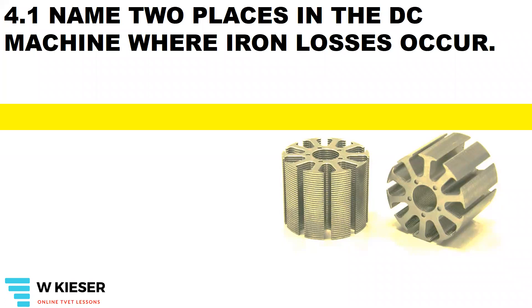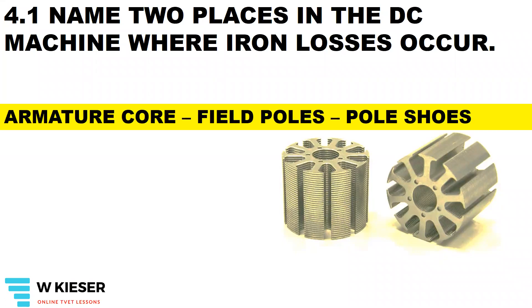Name two places in the DC machine where iron losses occur. The armature core, field poles, and pole shoes.